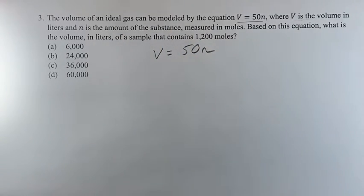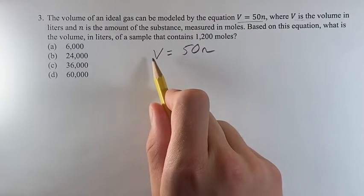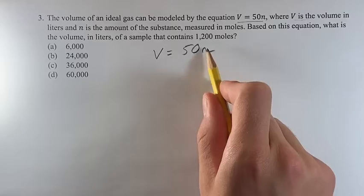If the amount of the substance is marked by n, all we have to do to find v is to plug in 1200 for n.